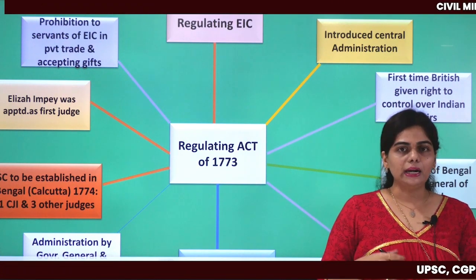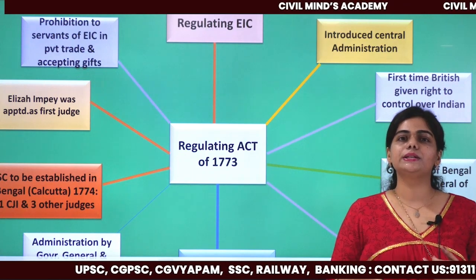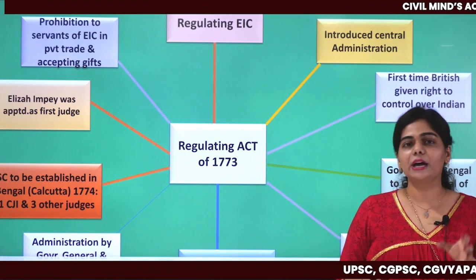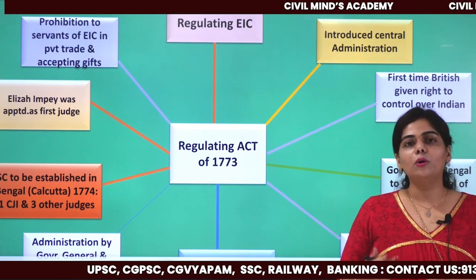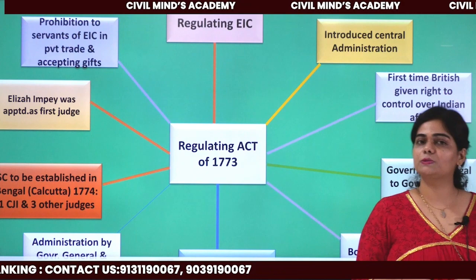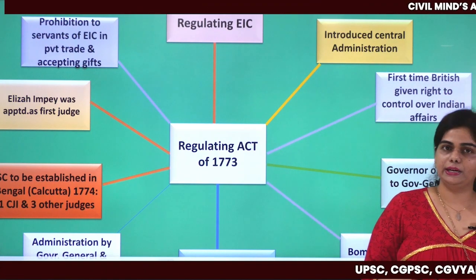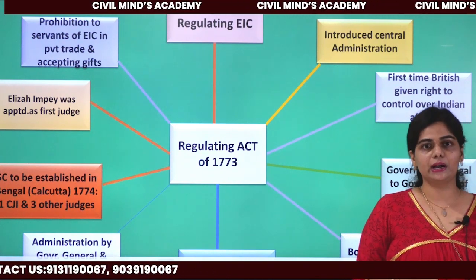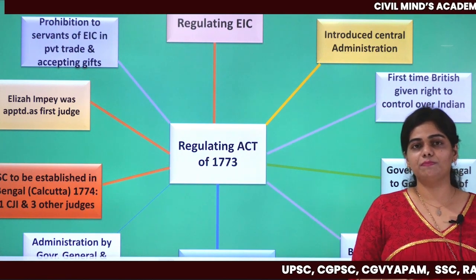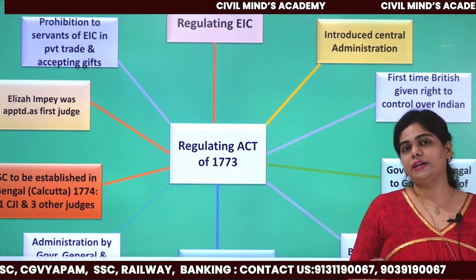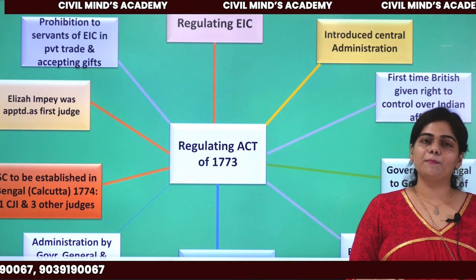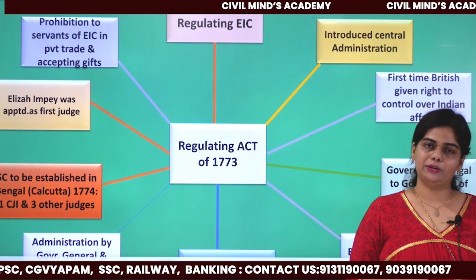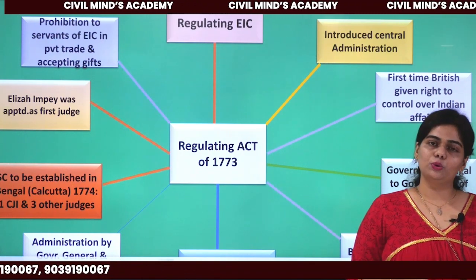The basic motto of the East India Company was to trade, but gradually it started having its own military and became a political power. As the EIC started earning more money and growing financially, the British Empire became majorly concerned - they never wanted to lose India. The British Empire also said that the EIC was not working well in the ruling part, as various employees were involved in bribes and corruption, so it was needed to take control over the East India Company.